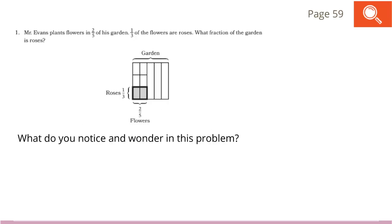In our math books on page 59, we see question 1. Mr. Evans plants flowers in two fifths of his garden. One third of the flowers are roses. What fraction of the garden is roses? First thing I want you to focus on is what do you notice or wonder in this problem? We do see that we have 2 fifths of his garden being flowers. If we divide that whole garden into fifths, 2 fifths would be flowers, and the rest — those 3 fifths — are not flowers.